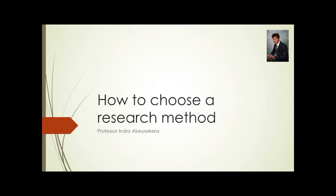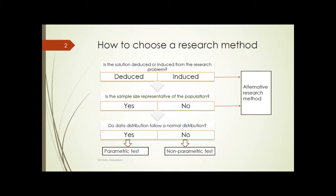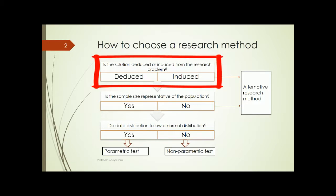Our process graph is there. Let's look at how to choose a research method. Before we choose a research method, we need to ask three questions. First, is the solution going to be deduced or induced from the research problem? If it's going to be deduced, then we will look at the scientific approach. If it's going to be induced, we will look at alternative research methods.